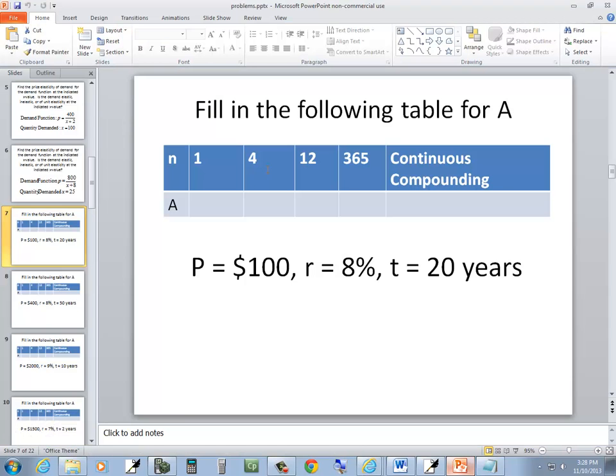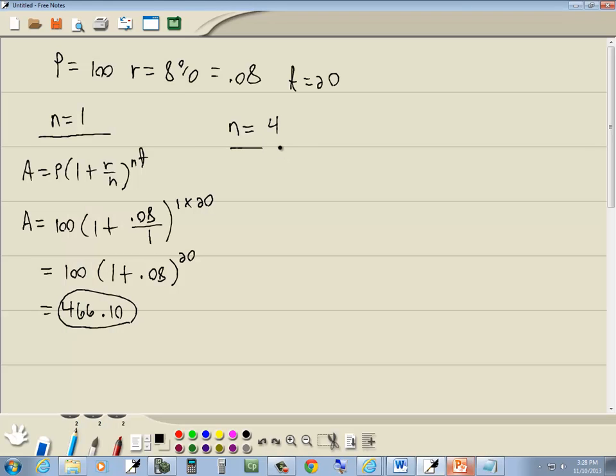Okay, so our second problem says, our second part says n is equal to 4. So again, we're going to use this formula because it doesn't say continuous. So we've got A is equal to P times 1 plus R over n to the nt power. P is still 100. 1 plus R, R is 0.08, divided by n, which was 4, raise the nt power. So we've got 4 times t, which is still 20.